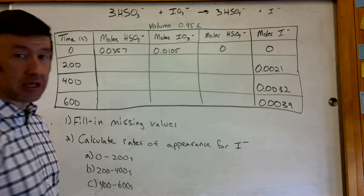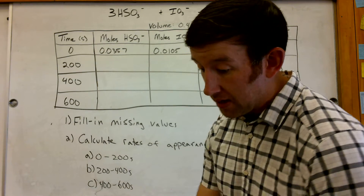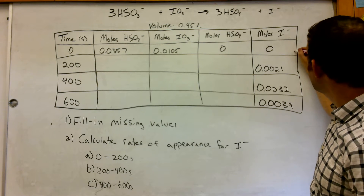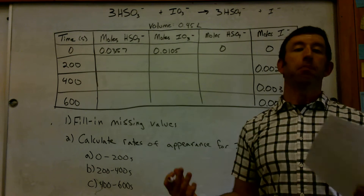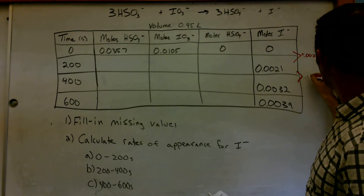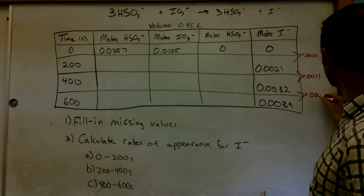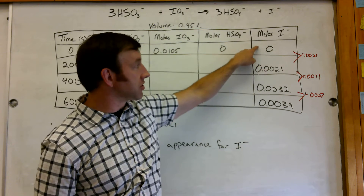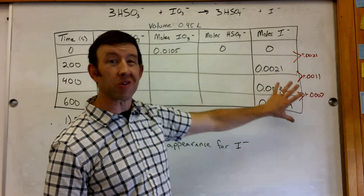The typical thing to do is take the given information and find our difference. So between 0 seconds to 200 seconds in this interval, we have an increase in iodine of 0.0021 — that's a positive 0.0021 moles increase. In the next interval, we increase by 0.0011, and in the next interval, we increase by a positive 0.0007. All I'm doing is taking the difference: so 0.0021 minus 0 is a positive 0.0021; 0.0032 minus 0.0021 is 0.0011, and so on.